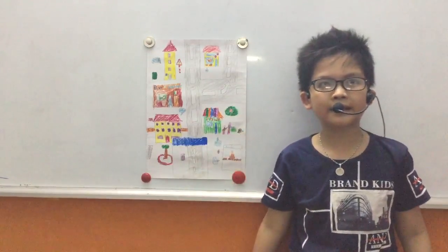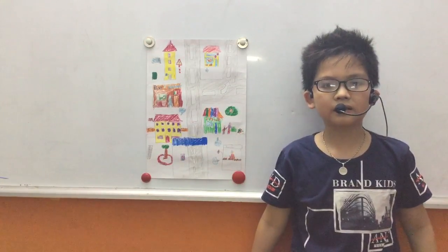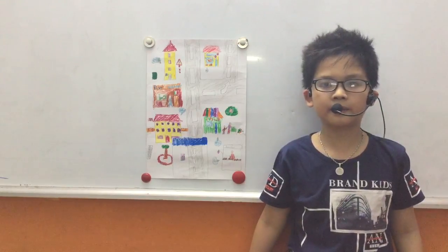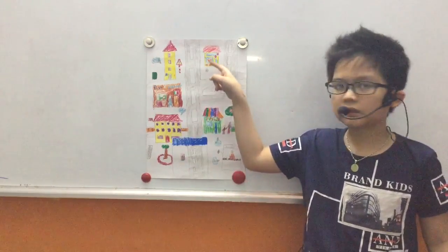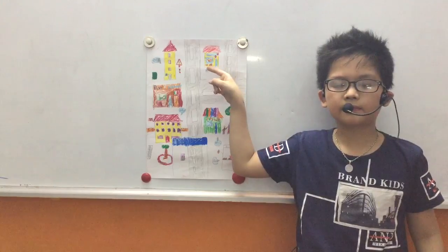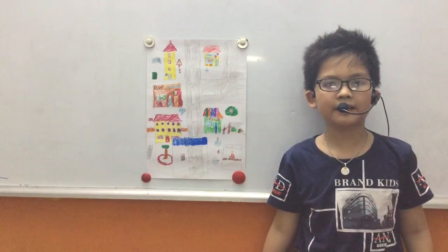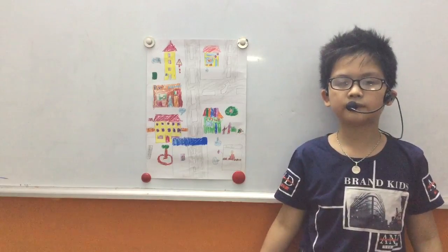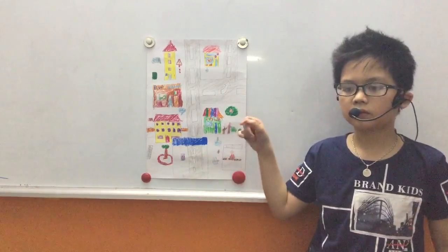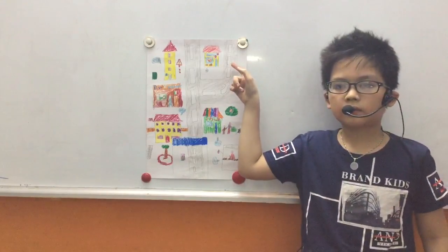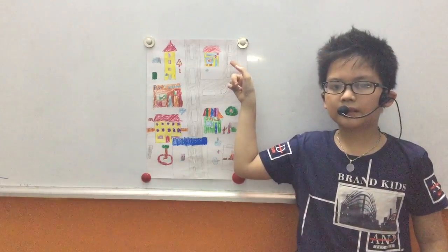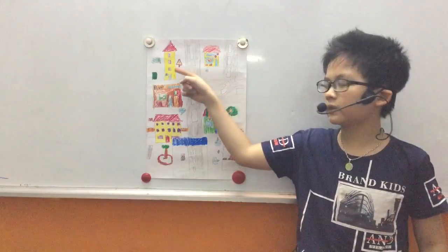Now we learn about five places in my neighborhood. First, bakery. I go there one minute on foot. It is across from my house.